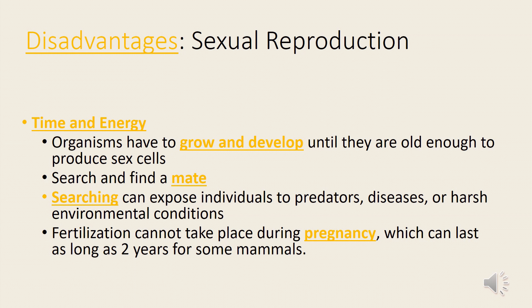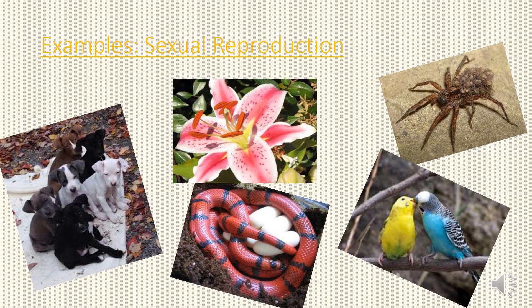Fertilization cannot take place during pregnancy, which can last as long as two years for some mammals. Here are some examples of sexual reproduction.